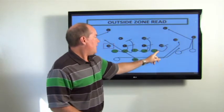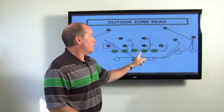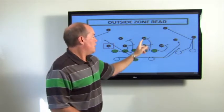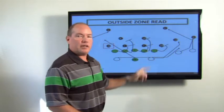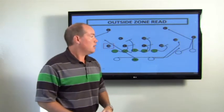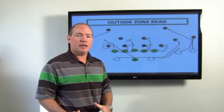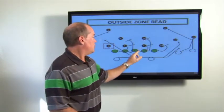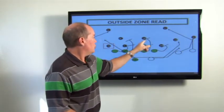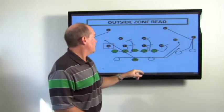Tackle. I've got a five technique. These two would be working together. We call that an ace. These two are here. If the guard and tackle are working together, that would be a deuce. If a tackle and a tight end are working together, that's a trade. Right here we're in an ace situation, so we're going to have these two are responsible for these two.